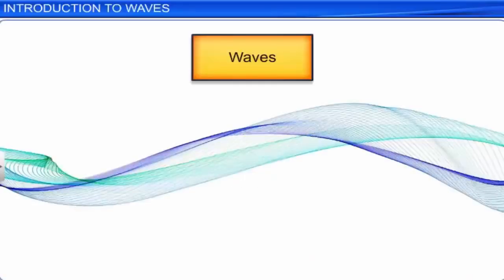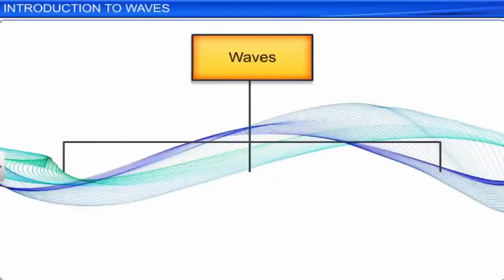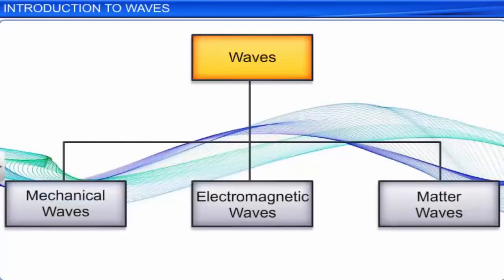Waves are classified into three types: mechanical waves, electromagnetic waves, and matter waves.